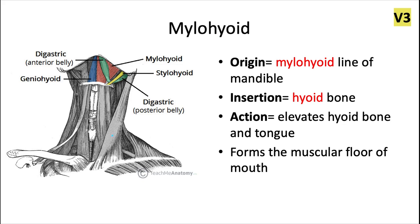The mylohyoid originates from the mylohyoid line of the mandible, and it also inserts to the hyoid. It elevates the hyoid bone and the tongue, and it also forms the muscular floor of the mouth.